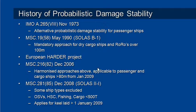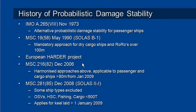A little bit of history is in order. The probabilistic approach started way back in 1973, and the first implementation was just an alternative method for computing stability of passenger ships. In 1990 that was upgraded and a new mandatory approach for cargo ships and ro-ros was developed. These two methods were slightly different, but there was a research project called the HARDER project in Europe, and the result of that was a harmonization of those two rules into Marine Safety Committee Resolution 216(82).